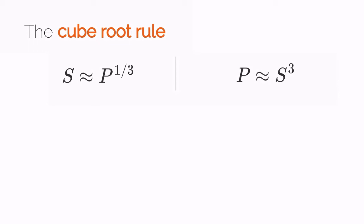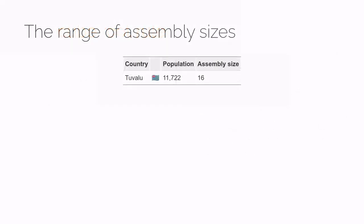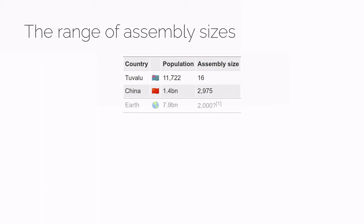So if a legislature has 100 members, we should expect the country's population to be around 1 million. To give some concrete examples, one of the world's smallest legislatures is found in Tuvalu — the parliament there has just 16 members. The world's largest legislature is the Chinese National People's Congress, with almost 3,000 members, far more than the cube root rule would suggest. One article suggests that if we ever turned the United Nations General Assembly into a genuinely representative chamber, we'd need around 2,000 members.